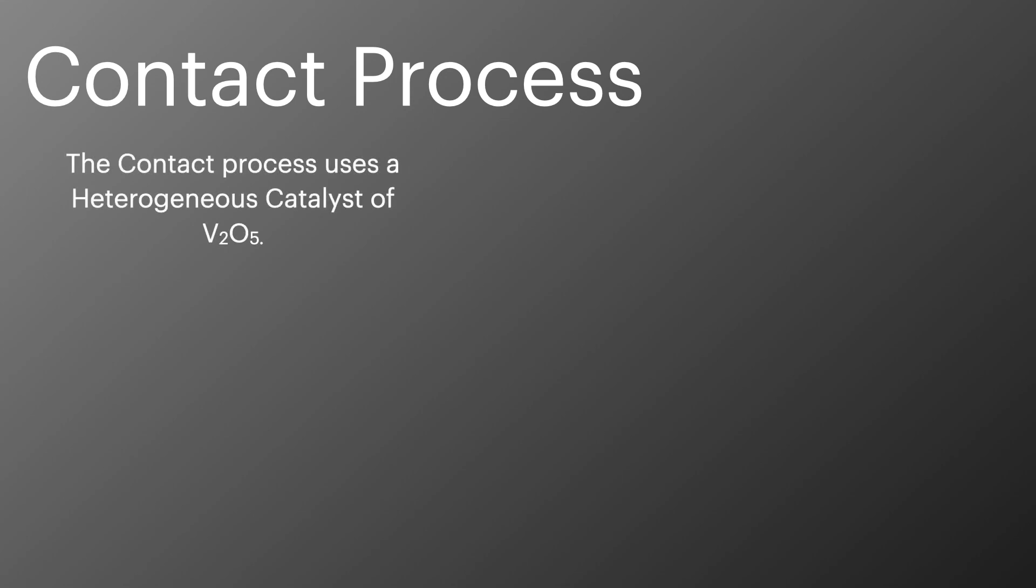The contact process is an important example of a heterogeneous catalyst. Sulfur dioxide gas is reacted with oxygen gas in the presence of a solid vanadium oxide catalyst to form sulfur trioxide. This is a two step process.